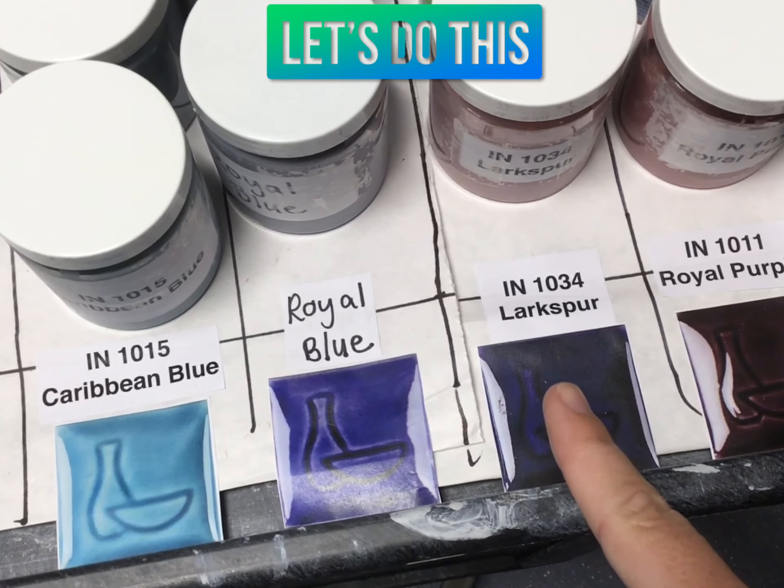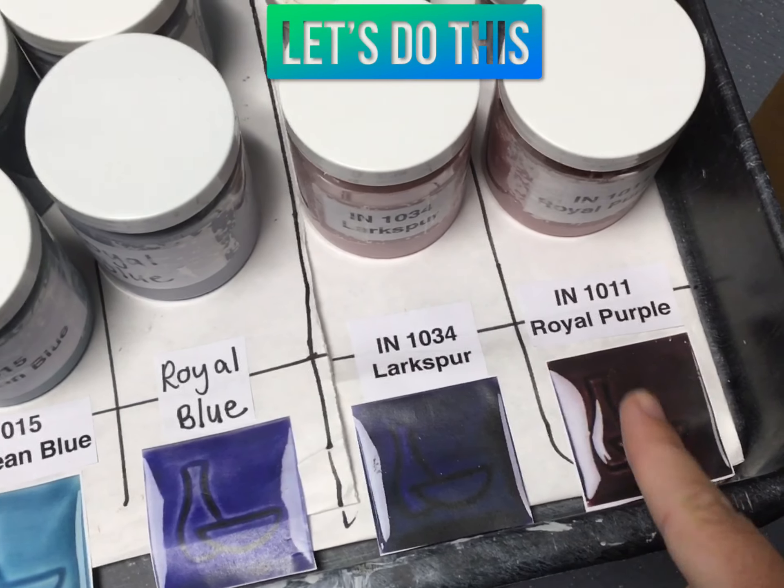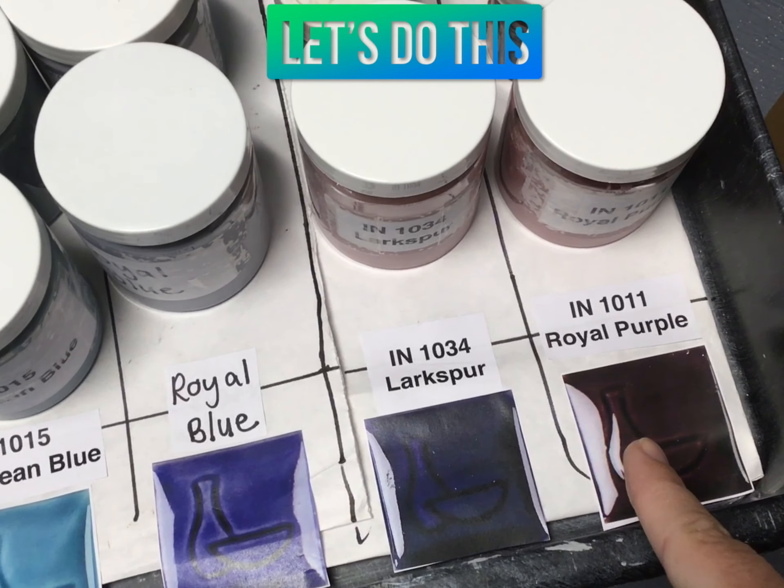Larkspur is purple, kind of like a dark purple, and then royal purple is a little bit more of a purpley pink color.